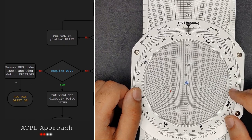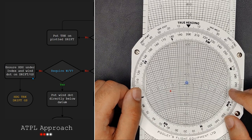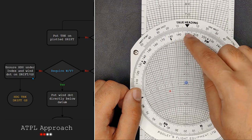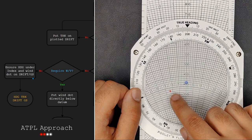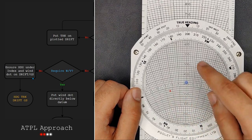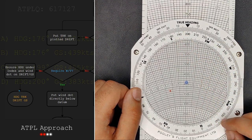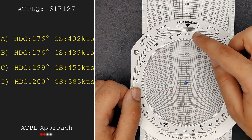Then we get to this statement here which tells us to ensure the heading is under the index and the wind dot is on the drift and ground speed. So we take a look and see that our track isn't on the index it's our heading and our wind dot is on 12 degrees which is also what the track on the inner scale lines up with.